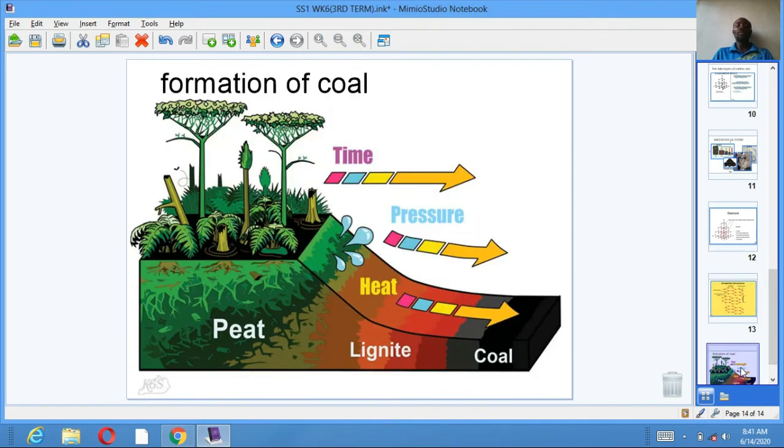Formation of coal. Coal is formed when there is mass burial of plants and animals over a long period of time, usually called carboniferous era, under high temperature and pressure. Types of coal are peat, lignite, bituminous, and anthracite.